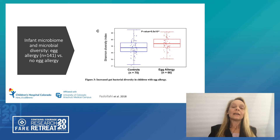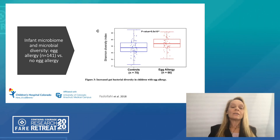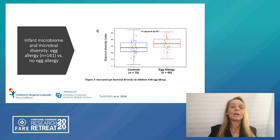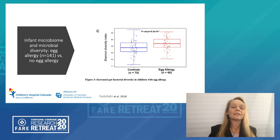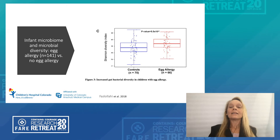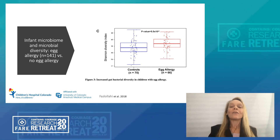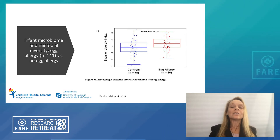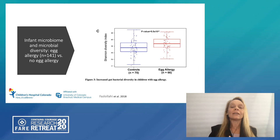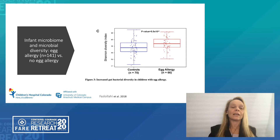Nothing in allergy is ever simple, and one plus one doesn't always make two. This is data from the COFAR study looking at microbiome diversity in children with and without egg allergy using the Shannon index. Surprisingly, we can see that children with egg allergy have higher gut microbiome diversity, which is the opposite of what we were expecting. So we still need to learn more about how the microbiome behaves in children with different kinds of food allergy.